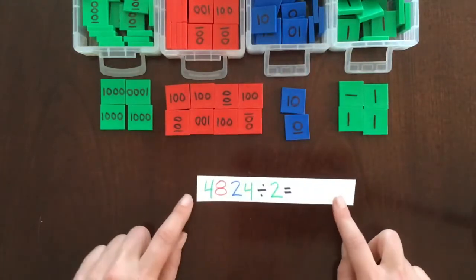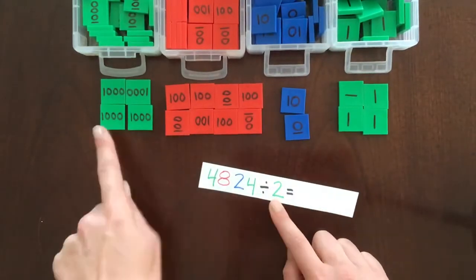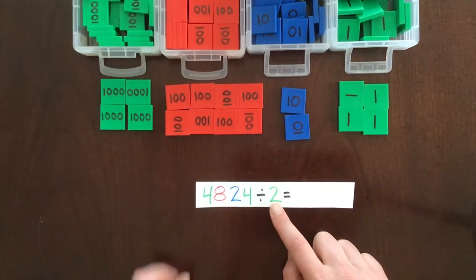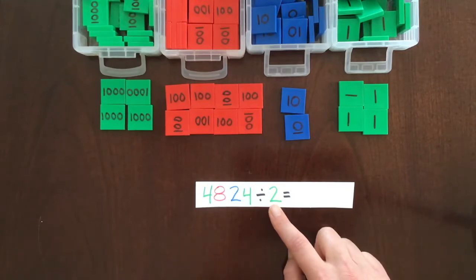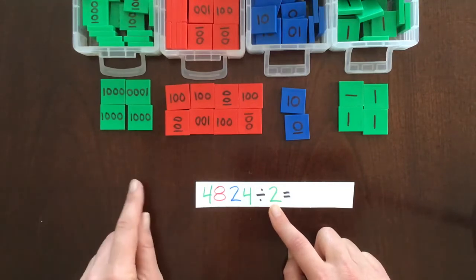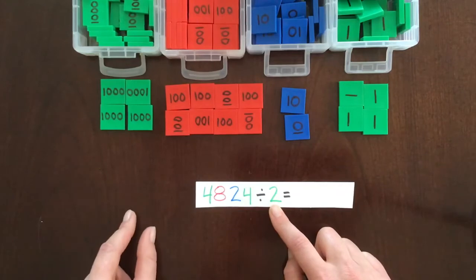Okay, now we're going to divide this by 2, and the divisor tells you how much each group or each person gets. And in the Montessori stamp game that you purchase, they have these little skittles. They almost look like little abstract people.